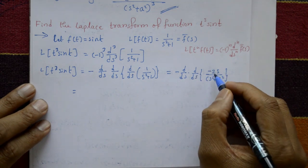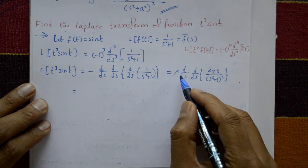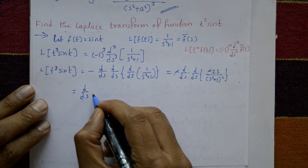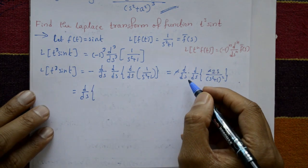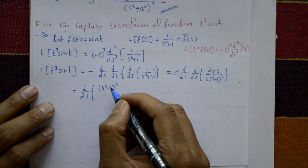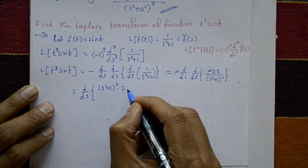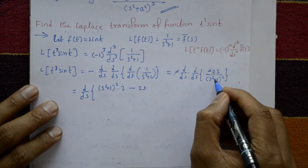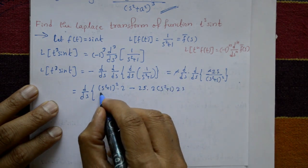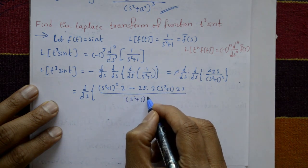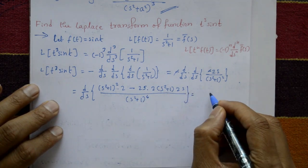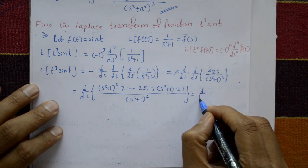The two minus signs cancel, giving a positive. Differentiating -2s/(s²+1)² again with respect to s using the quotient rule: the numerator differentiates to give (s²+1)²·(-2) minus (-2s)·2(s²+1)·2s, divided by (s²+1)⁴.